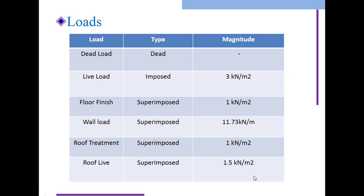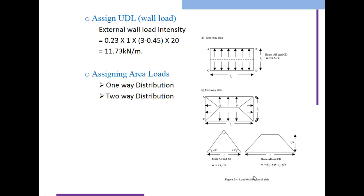There are different kinds of loads we assign on a building. Dead load, live load, floor finish, wall load, roof treatment, roof live. Always remember the minimum magnitude for these. Dead load we cannot consider minimum magnitude - whatever structure you created, length into breadth into depth or height is dead load. Live load magnitude is 3 kN/m². Floor finish is 1 kN/m². Wall load is 11.73 kN/m. Roof treatment is 1 kN/m². Roof live load is 1.5 kN/m².